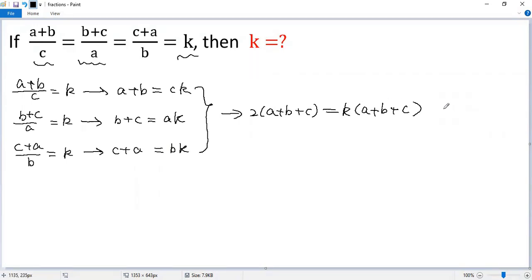The correct way would be to move this term to the left side. So we get 2 times a plus b plus c minus k times a plus b plus c equals 0. Then we take the common factor a plus b plus c out. So we get 2 minus k times a plus b plus c equals 0. So we have two cases.